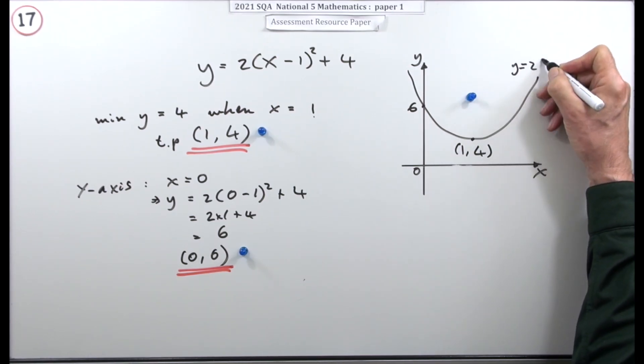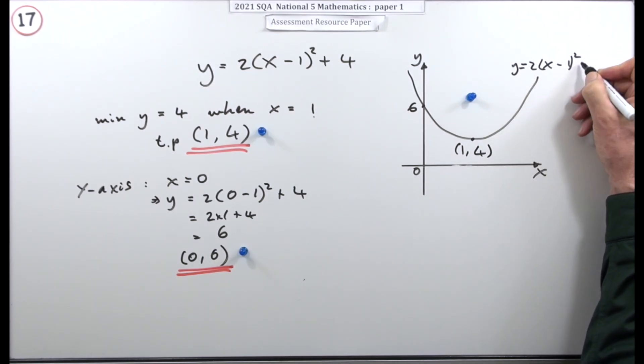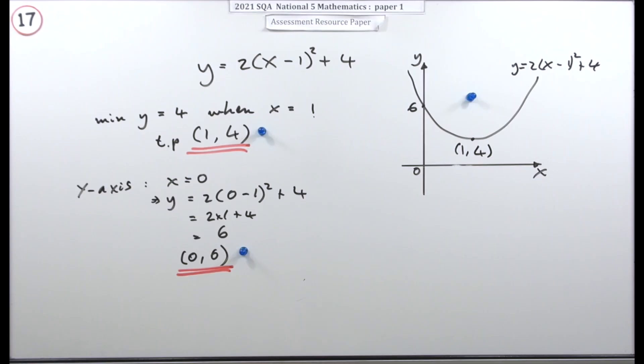That's the graph of y equals 2 times x minus 1 squared plus 4.